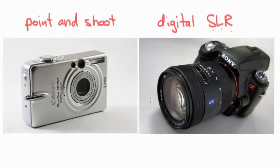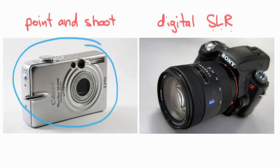The point-and-shoot tries to contain everything inside one little box — you don't have to change the lens, you don't have to do anything. They're also often a little bit more automated so that you don't have to make as many choices.